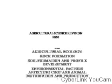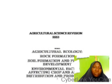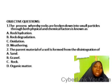Welcome to this week's lesson. We shall continue with our revision lesson and look at section B of our syllabus. Those areas include agricultural ecology, covering rock formation, soil formation and profile development, and environmental factors affecting crop and animal distribution and production. Some questions have been drawn from these areas, which we shall look at now.